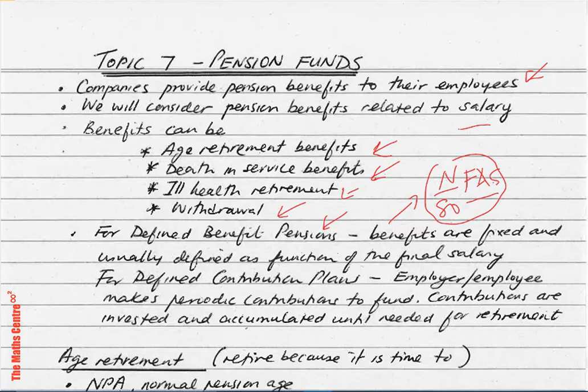The other type of pension plan is the defined contribution plan, where the employer and the employee both make periodic contributions to a fund. These contributions are invested and accumulated until needed for retirement. At retirement age, the accumulated fund is used to buy, say, an annuity. So a defined contribution plan is basically a saving scheme.